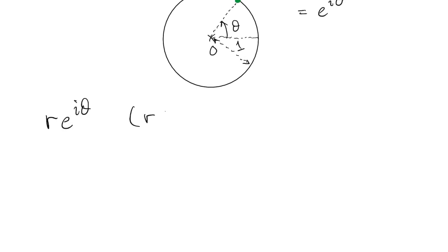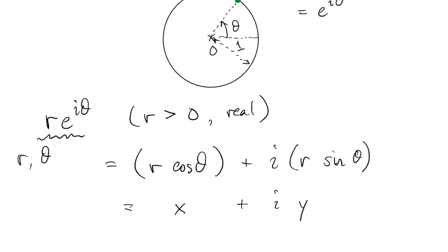If we put an r out in front, where r is a positive real number, well, applying Euler's identity again, we get r cosine θ plus i r sine θ. And these are what we recognize as x and y when we do polar coordinates. So in fact, the term on the left here we can consider to be the polar form of a complex number. You specify r and θ to get the complex number.